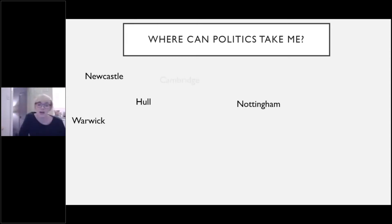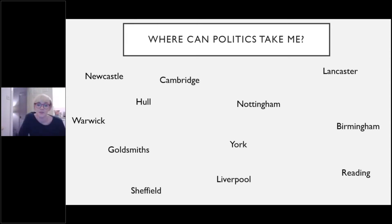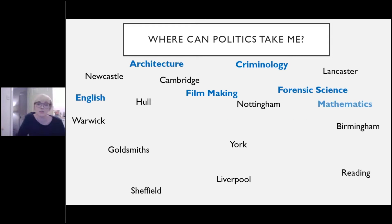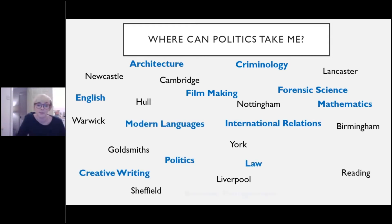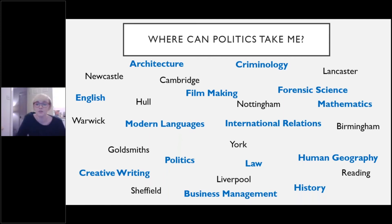These are some of the places that our politics students have gone to study at university, so there's a broad range across the country. And these are some of the courses that our students have decided to follow at university. There are some obvious ones like politics and history, international relations and law. There are also some different ones: criminology, architecture, mathematics, creative writing, business management. Hopefully you'll see that politics is useful and can take you wherever you want to go.